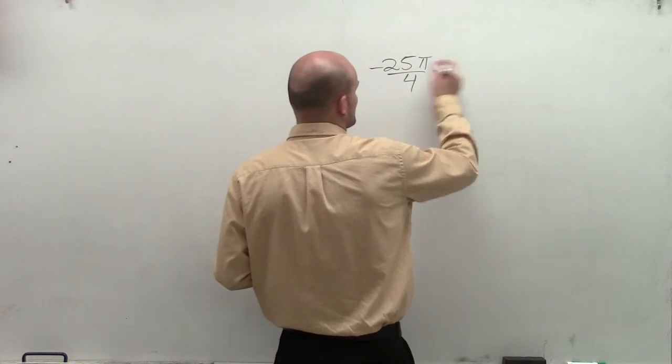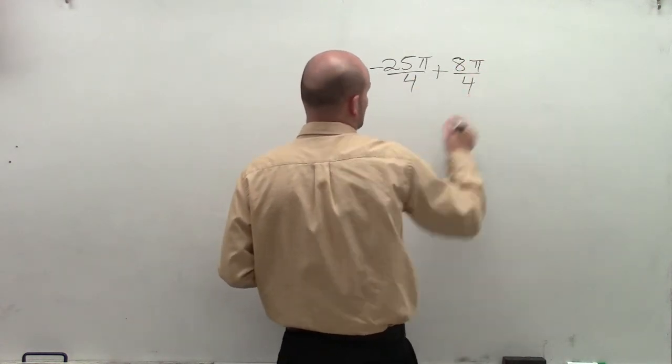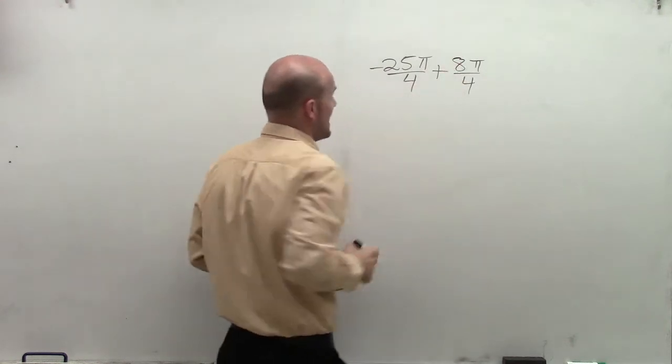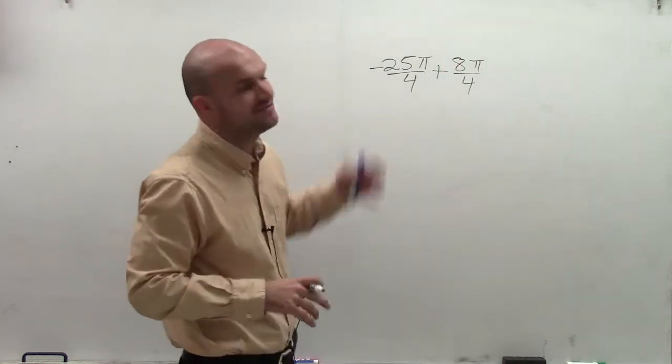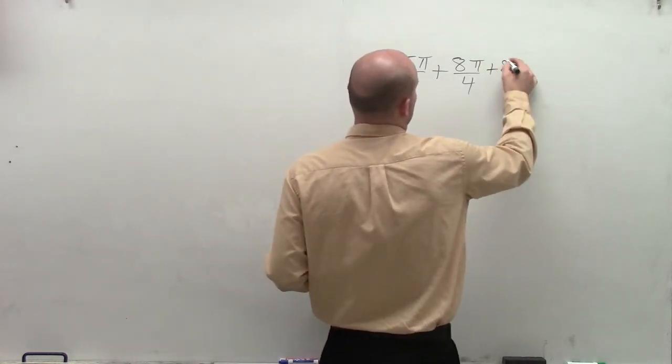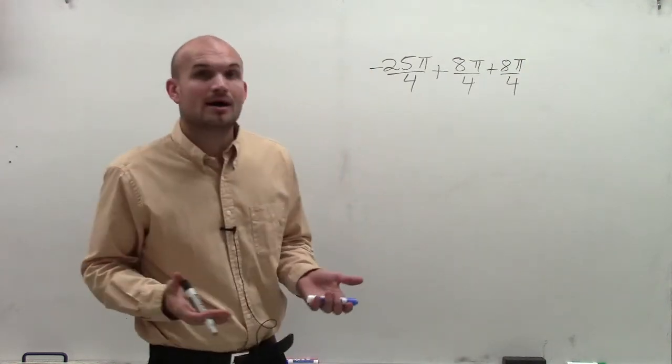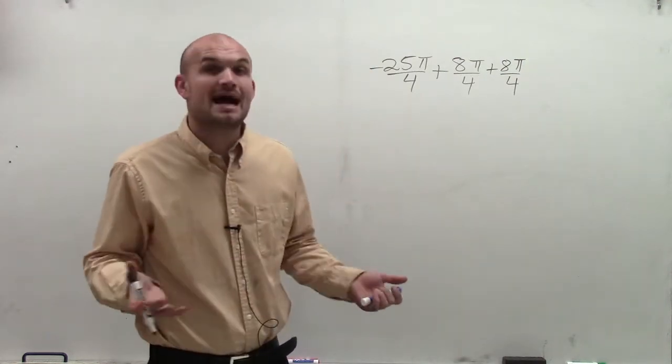When I add 2 pi, which in this case, since I have a denominator of 4, I can represent as 8 pi over 4. Therefore, when I add 8 pi over 4, I'm going to have negative 17 pi over 4, which is still not a positive angle. So I'll add 8 pi over 4 again, which gives me negative 9 pi over 4, which is still not positive.